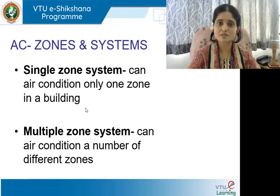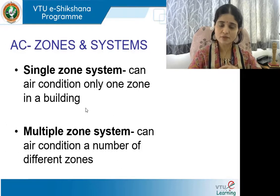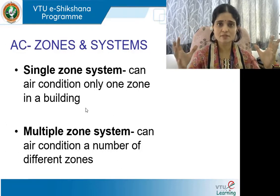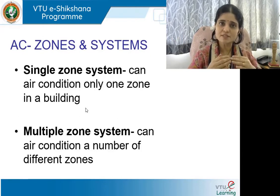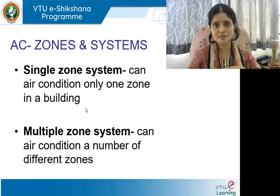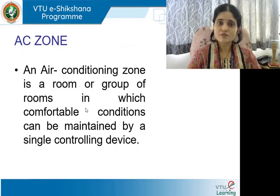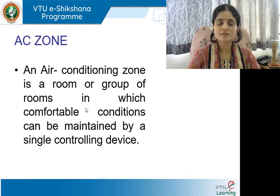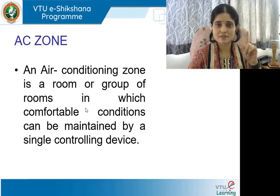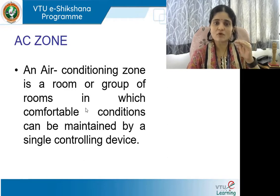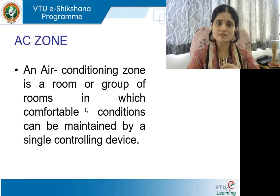Zoning the building as per the load requirement is essential. A lecture has been conducted on this previously in Module 1. Based on the cardinal directions — north, south, west, east — and the activity in that zone or set of spaces, zones are created. If we do this exercise at the concept stage itself, the building is going to be compatible with the HVAC and energy efficient. An air conditioning zone is a room or group of rooms in which comfortable conditions can be maintained by a single controlling device, hence collectively called a single zone.